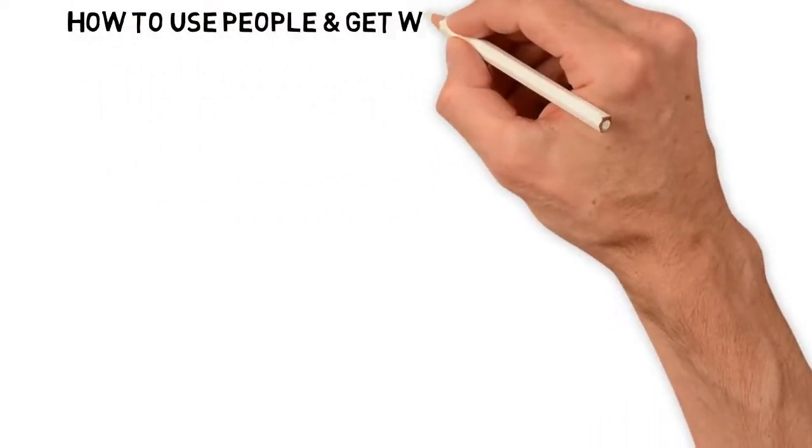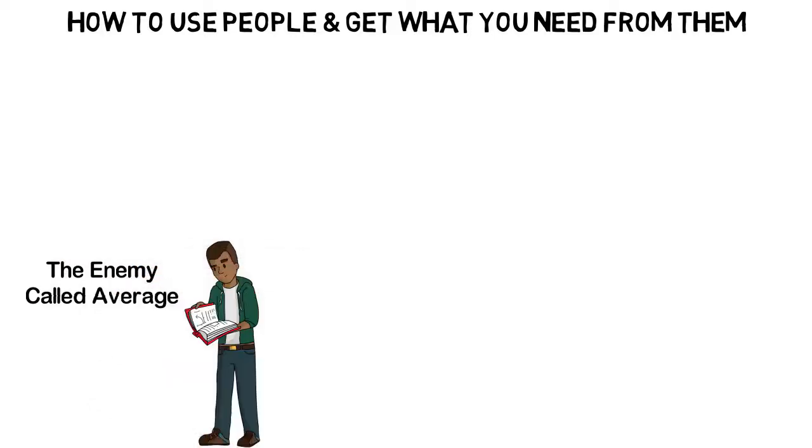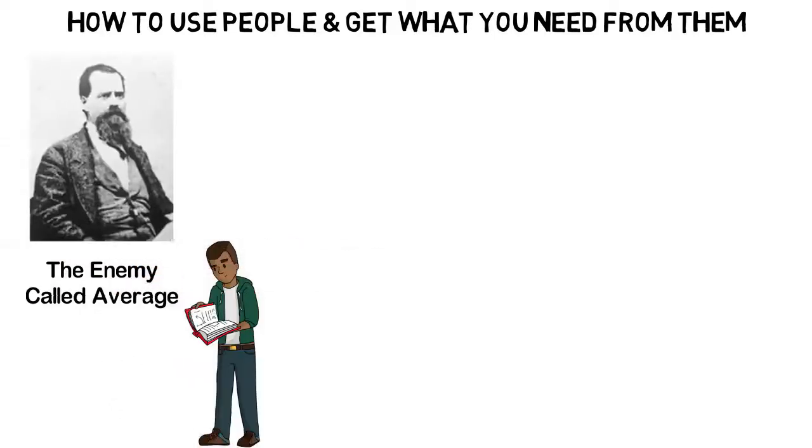How to use people and get what you need from them. When I was a little guy of about 17, I read a book called The Enemy Called Average by John L. Mason.